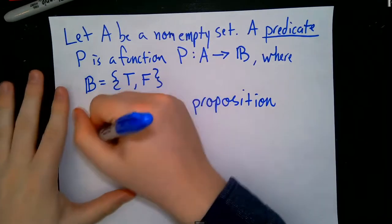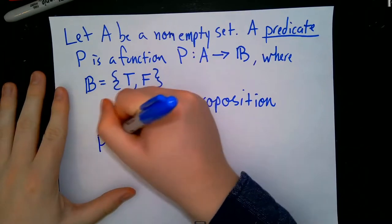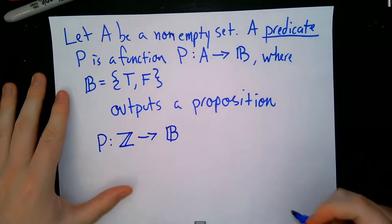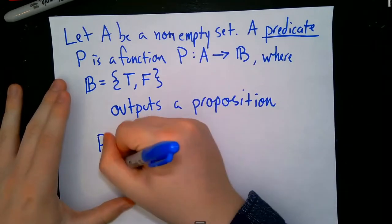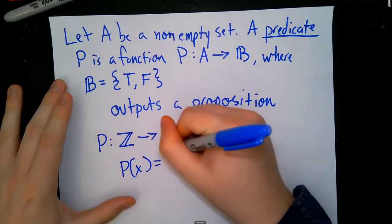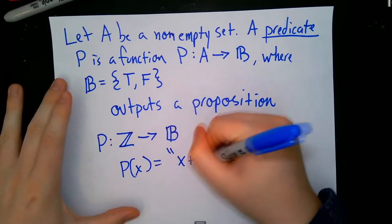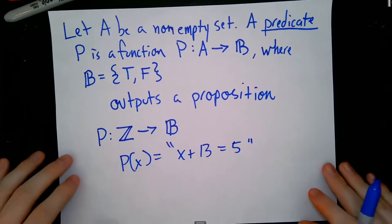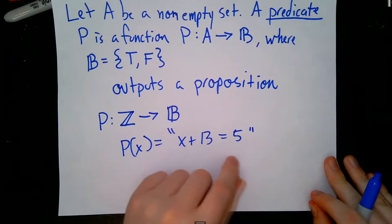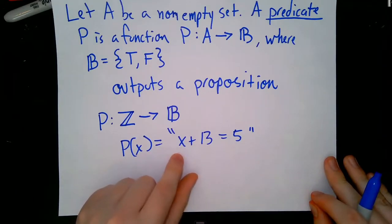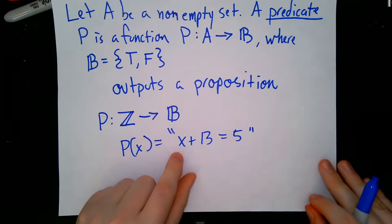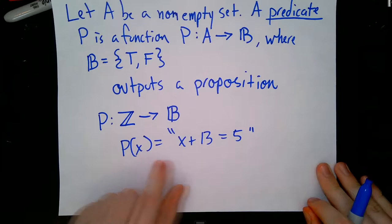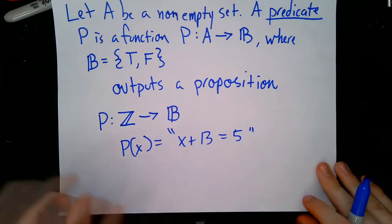So let's take for example the predicate p from the integers to our boolean space. We're going to define it as p(x) equals the statement x plus 13 equals 5. We've talked about why this by itself isn't a proposition — it's because we don't know x's value. The idea with a predicate is that we can put in values for x and get out a statement that is either true or false.